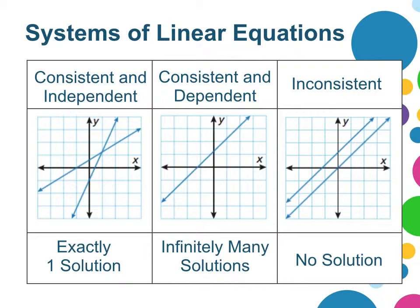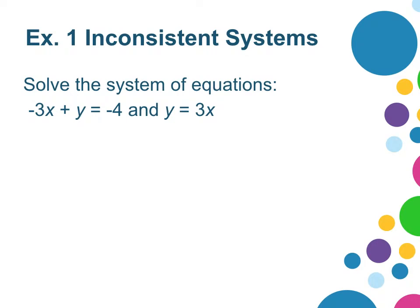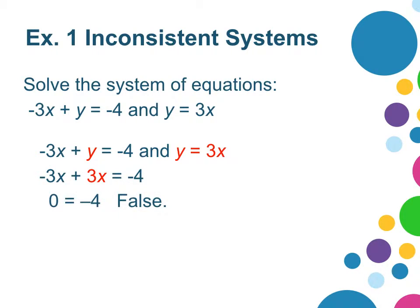Example 1, we're asked to solve a system of equations. I can use substitution to do this. I can notice that y equals 3x, so I can substitute 3x in place of y in the first equation. And I get 0 equals negative 4. That is false.